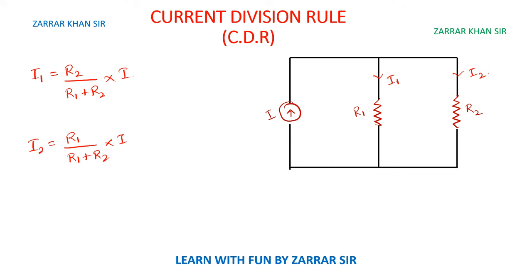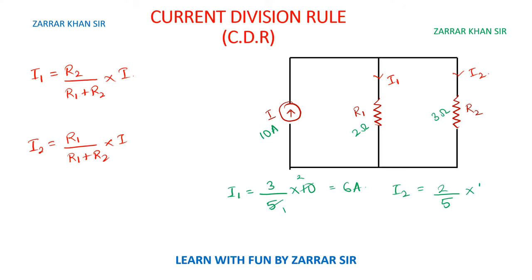Let's take an example. Assume total current is 10 ampere, R1 is 2 ohm and R2 is 3 ohm. I1 will be — while considering I1 I take R2 — so 3 upon 3 plus 2 is 5, multiplied by 10, which gives 6 ampere as I1. For I2, either subtract: 10 minus 6 equals 4 ampere, or use the formula: 2 upon 5, multiplied by 10, which also gives 4 ampere.